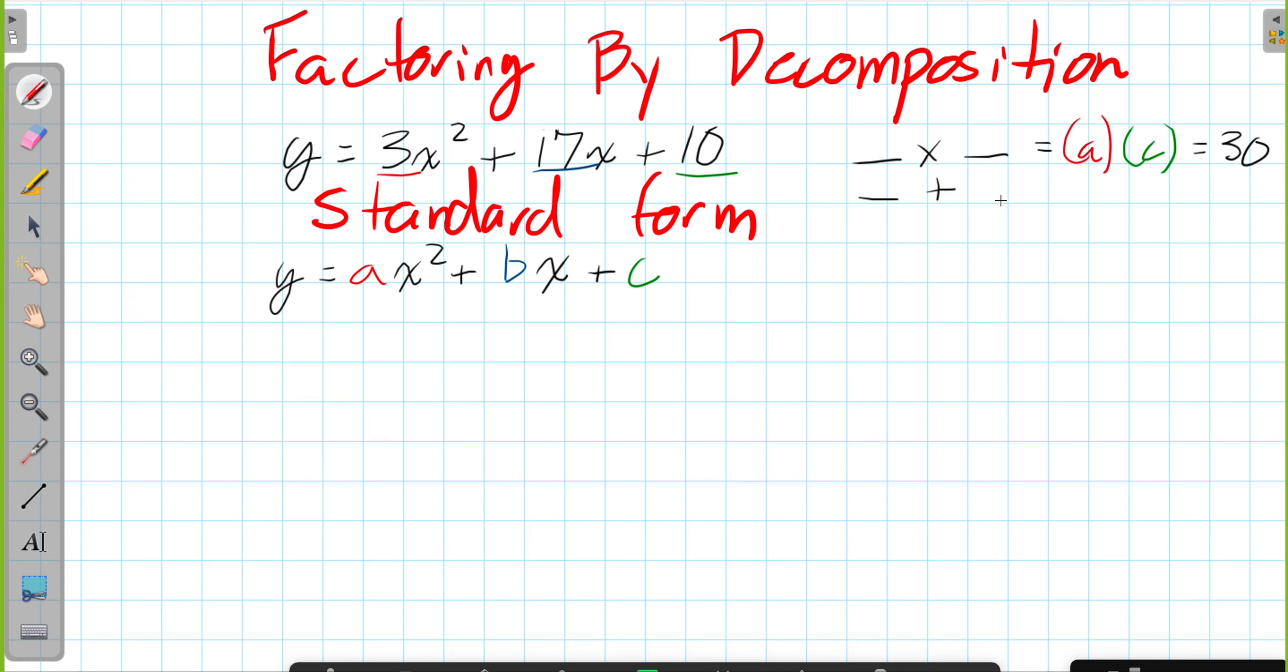And we also look - these same two factors will also equal to whatever our B value happens to be. And B in this case is 17.